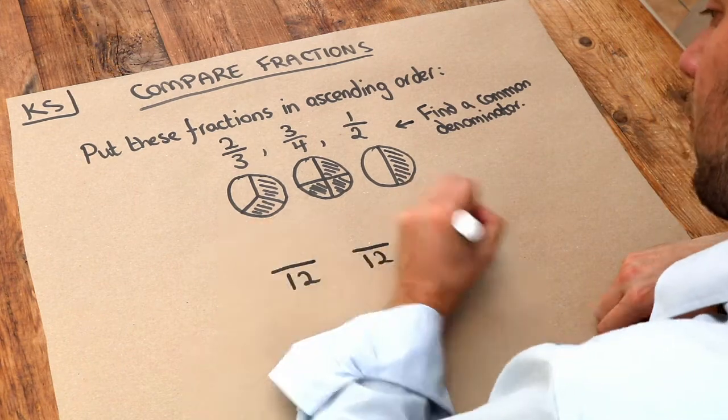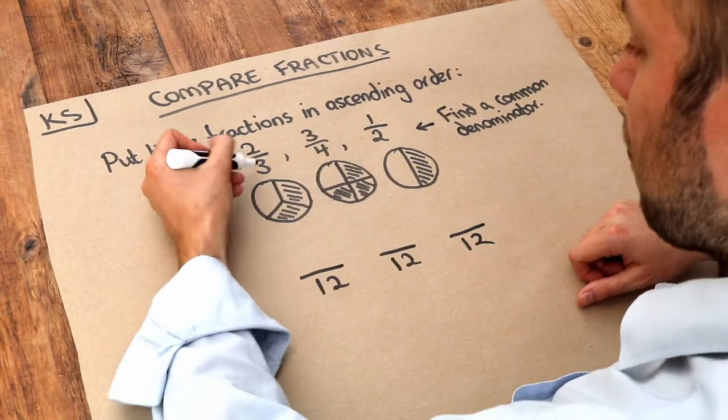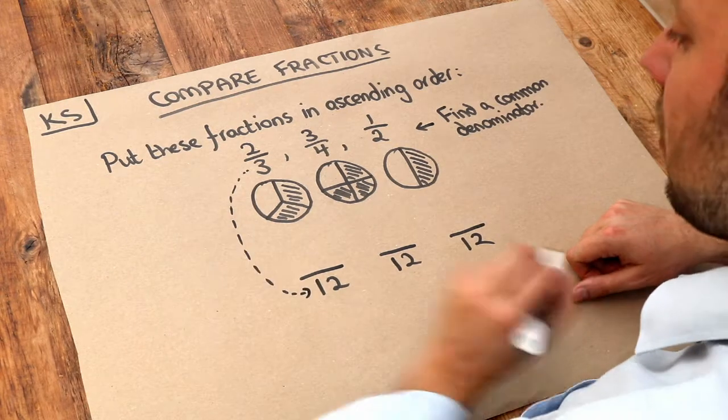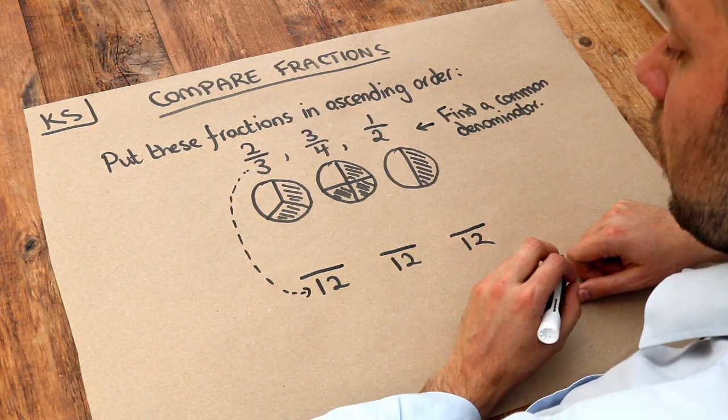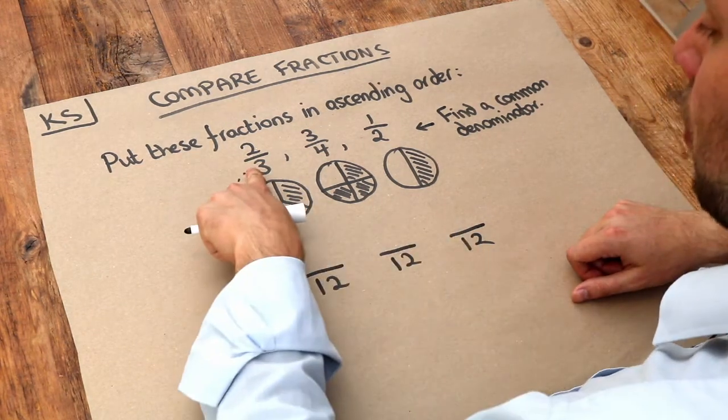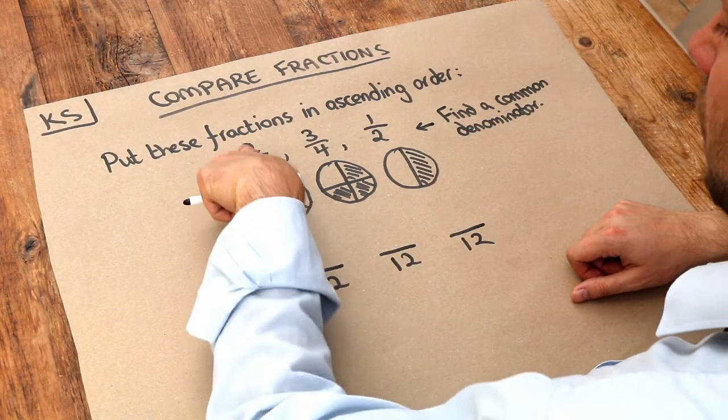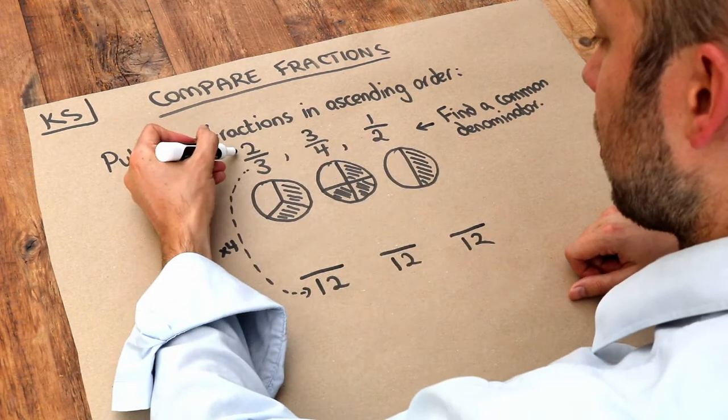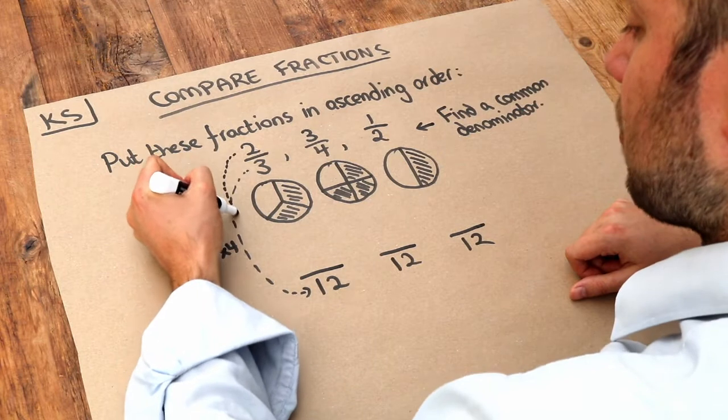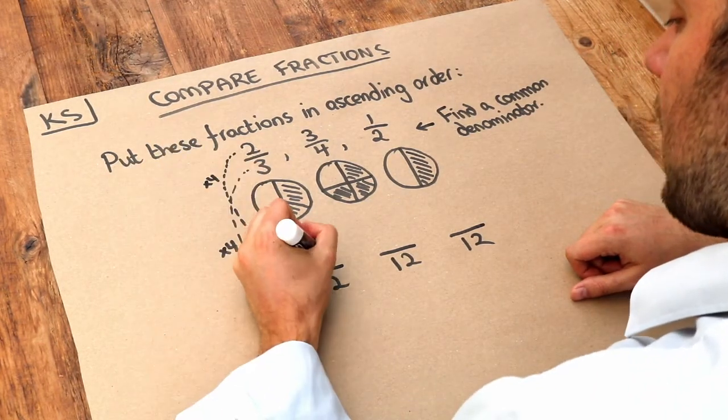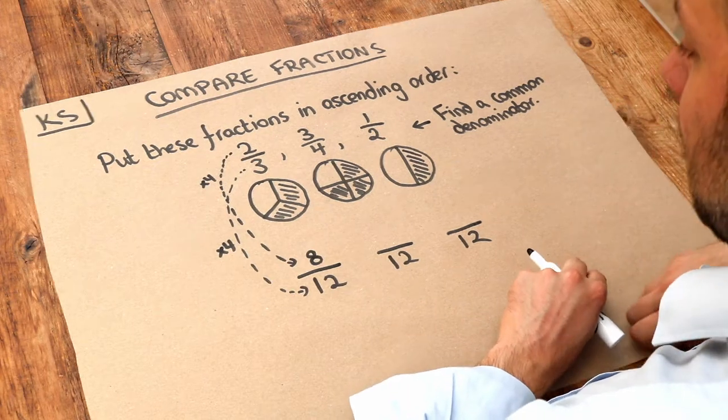Let's do that. To get from that three in the denominator to twelve, how many times bigger is that? Well, twelve is four times bigger than three, and remember, whatever we do to the bottom of the fraction we have to do the same to the top of the fraction to keep it as an equivalent fraction. So I also have to times the two by four, and that's going to become eight. So two-thirds is the same as eight over twelve.